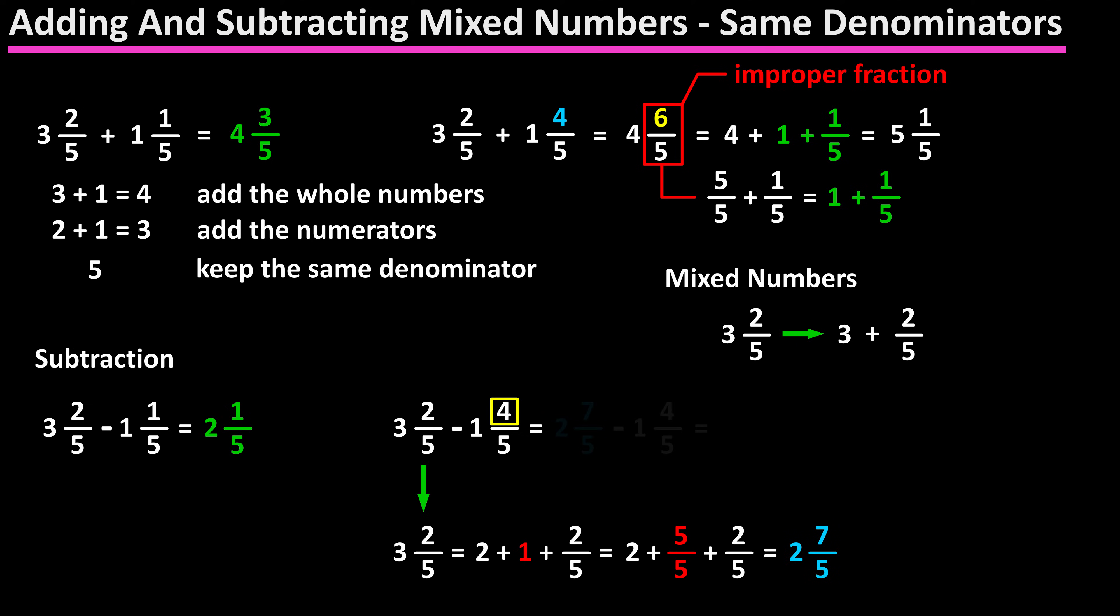And now we can do the subtraction, 2 and 7 over 5 minus 1 and 4 over 5. Subtract the whole numbers, 2 minus 1 is 1, subtract the numerators of the fractions, 7 minus 4 is 3, and keep the same denominator of 5. So the final answer is 1 and 3 over 5.